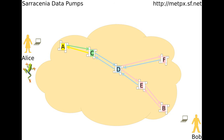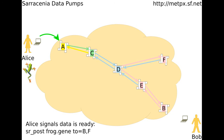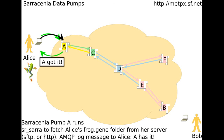It would be easier if Alice could just hand her file tree off to a data pump close to her network, configured by admins to use the best placement methods and routes. The pumps can forward the files to each other to get them to Bob. The green arrows are AMQP messages from Alice to pump A for each file in Alice's tree. Alice's local pump uses SR Sara to fetch Alice's folder, and then announces to anyone listening that Alice's folder is on A, looking for a way to get to B and F. Pump A tells Alice that it has done its job by sending log messages back.